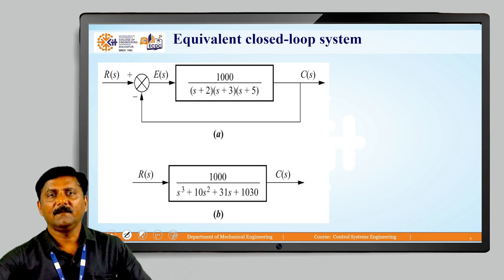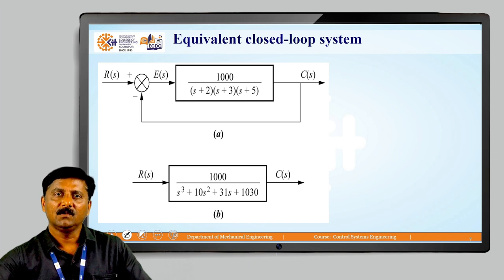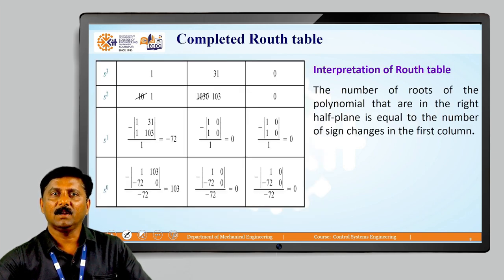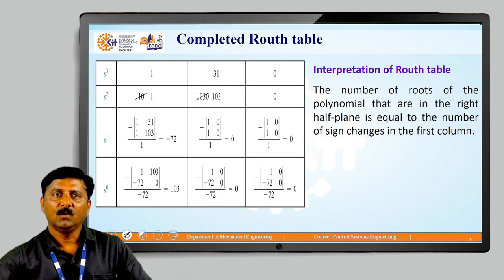Taking a worked example: the forward gain block is 1000 divided by (S+2)(S+3)(S+5). The closed loop transfer function C of S by R of S is G of S divided by 1 plus G of S times H of S for negative feedback. This gives a characteristic equation of S cubed plus 10 S squared plus 31 S plus 1030. Preparing the Routh table with rows S3, S2, S1, S0, the first column values are +1, +10, minus 72, and +1030.